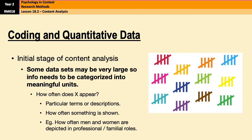Or if you're analyzing TV, you might look at how men and women are depicted in professional roles or in roles at home, which is something that a study by Furnham and Farringer looked at in 2000. So the initial stage is always coding — turning descriptive qualitative data into quantitative data.